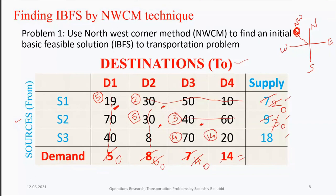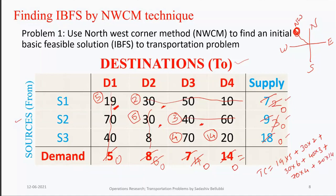Once all supplies and demands are exhausted, we calculate the total transportation cost: (19×5) + (30×2) + (30×6) + (40×3) + (70×4) + (20×14). This gives us the IBFS using the Northwest Corner Method.